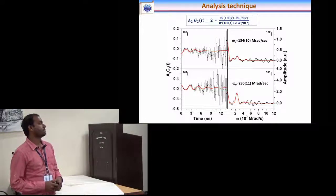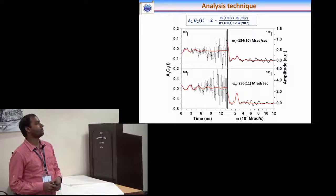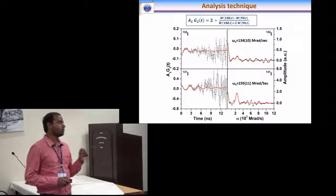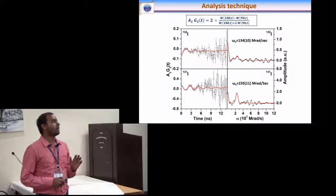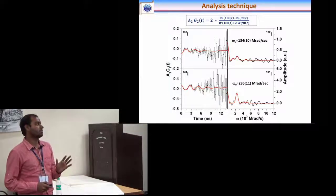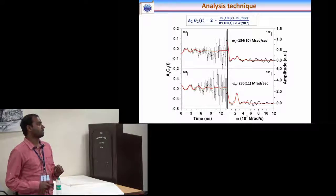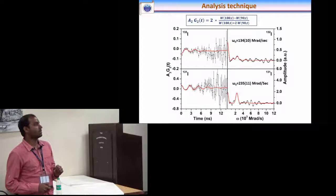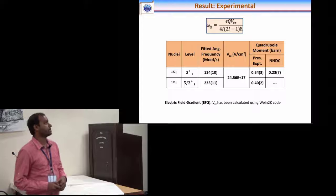We calculate the A2G2 values from this equation where W180 is the angular correlation between 0 degree and 180 degree and W90 is between 0 and 90 degree detectors. This is the plot and from the Fourier transformation of this data we calculate the quadrupole frequency.